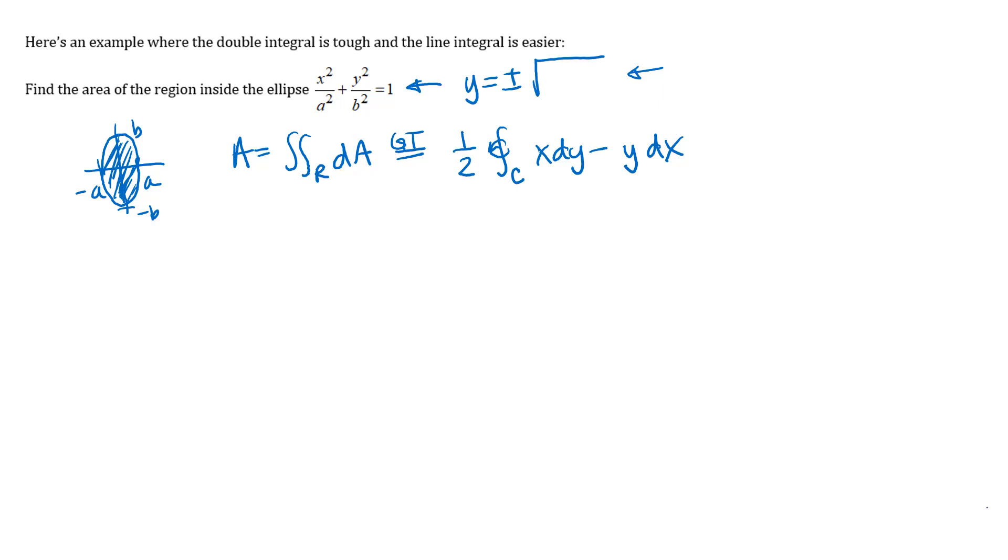What I need next is a parameterization of my curve with a counterclockwise orientation. So at this point in the semester, parameterizing an ellipse should not be difficult for you, and that does give a counterclockwise orientation. So there's our parameterization that we're going to use for our line integral. And from there, it's just a matter of substituting in.